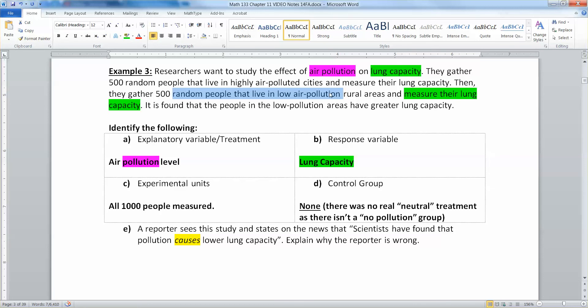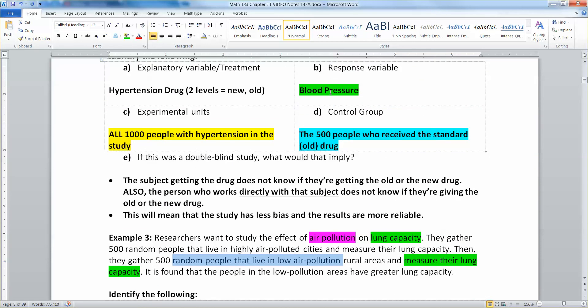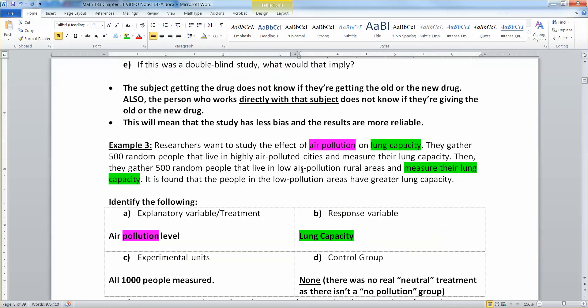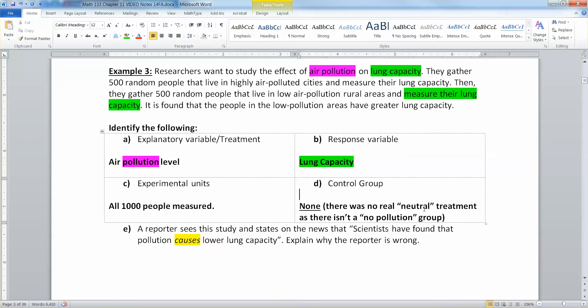As for control group, it's a little bit of a gray area, but I would argue that there isn't one. And that's because control group implies that there is a neutral treatment, the standard treatment, like in the case of a drug testing. But we don't really have either one of those things because we don't have an area that has no pollution. So there is no standard pollution level. So I would argue that there isn't a control group in this case.